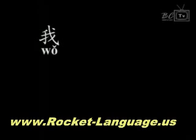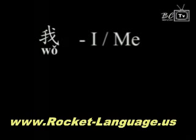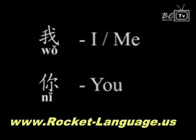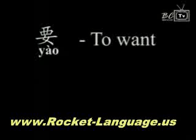我 — 我 means I and me. 你 — 你 means you. 要 — 要 means to want.